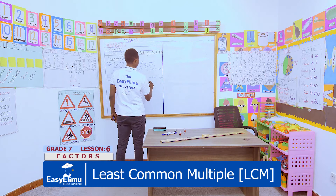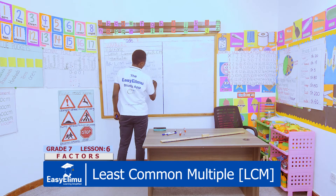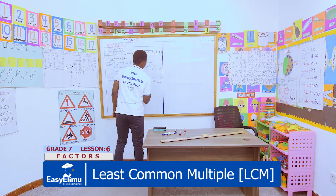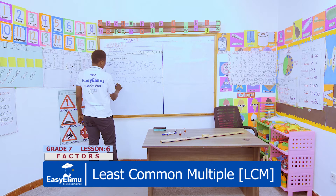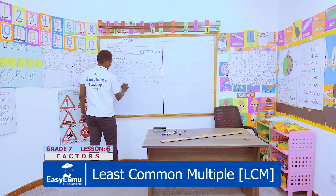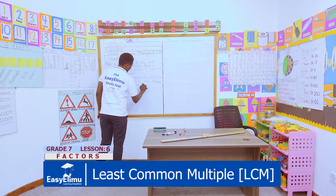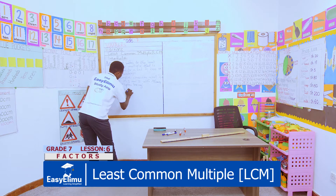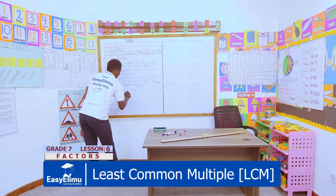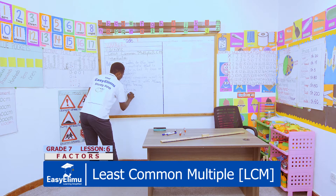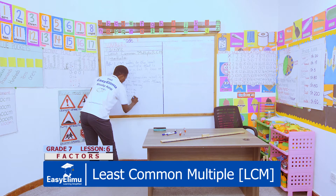For example, consider a set of numbers x, y, and z, with the first multiples being x times one which is x, y times one which is y, and z times one which is z.